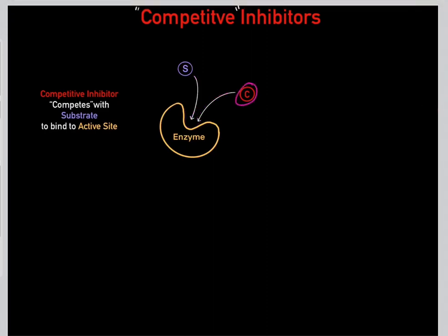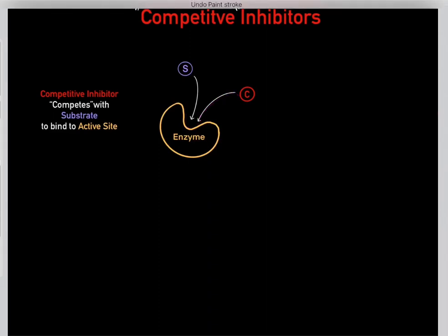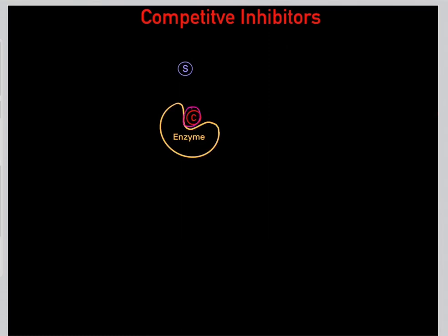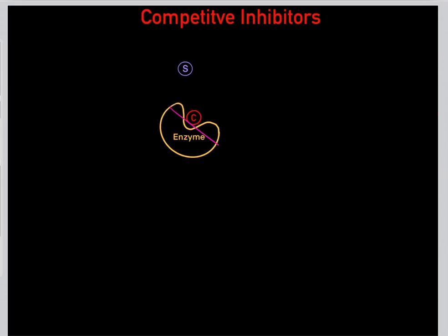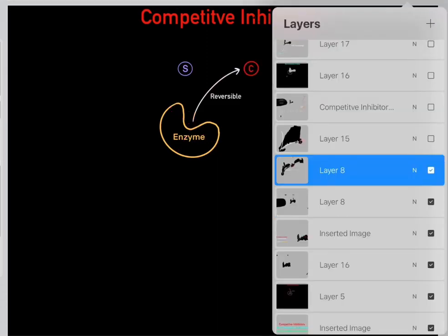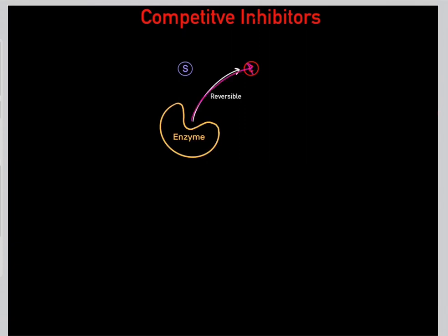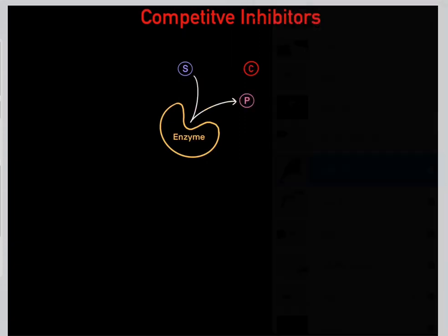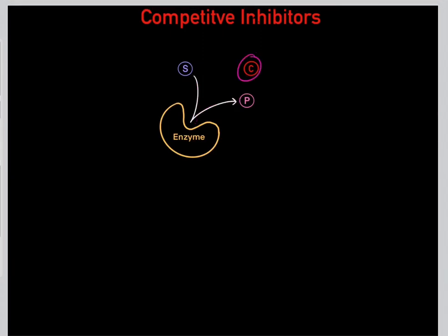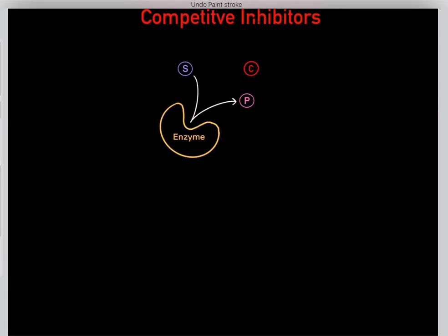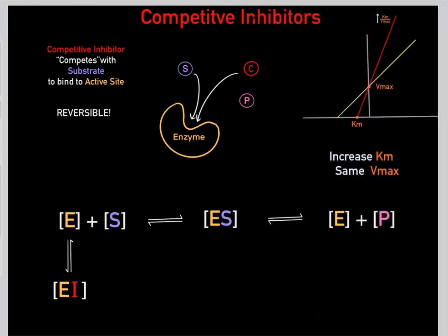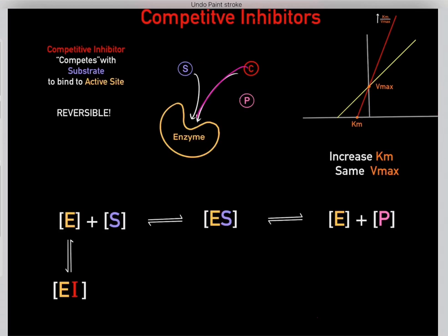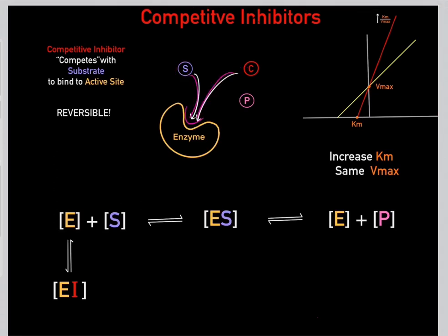Every now and then, the competitive inhibitor binds to the enzyme's active site, clogging it up. Once the active site is clogged, the enzyme is effectively inhibited and can't function. However, this is reversible — eventually the competitive inhibitor falls off, allowing the substrate to bind and be converted into product. So this competitive inhibitor reversibly inhibits the enzyme; it's temporary.